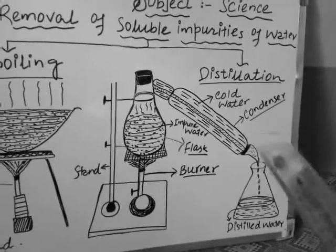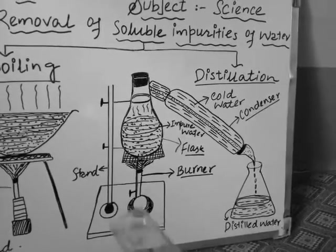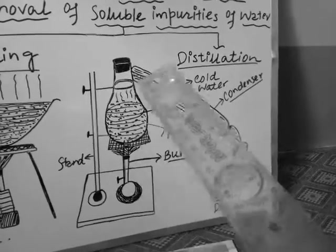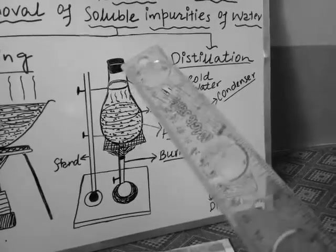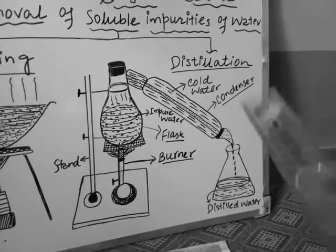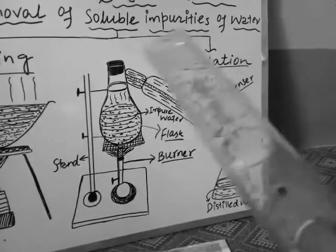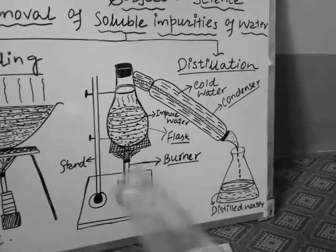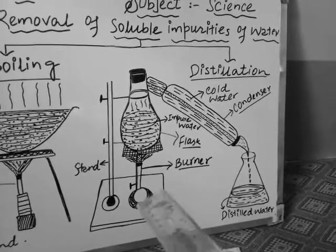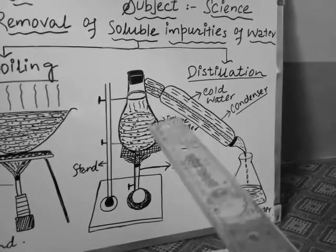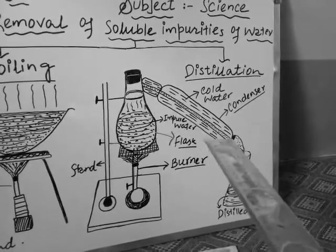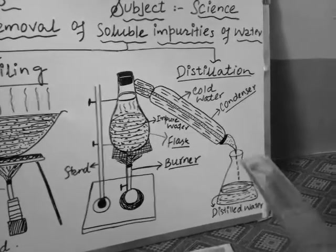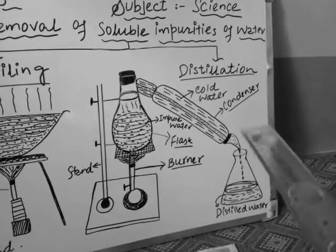Here I have drawn the distillation apparatus. You can see a stand and a round-bottomed flask — the distillation apparatus always uses a round-bottomed flask. There is a stand and a burner as usual. This part here is called the condenser, which is used for the condensation of water vapor. Here we will collect the distilled water.